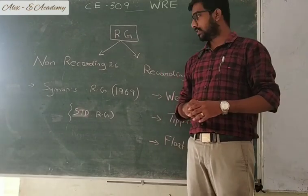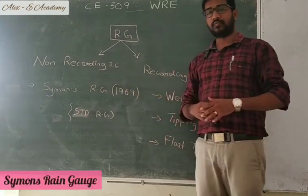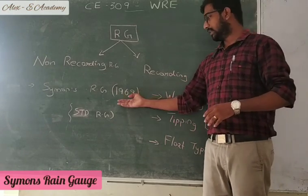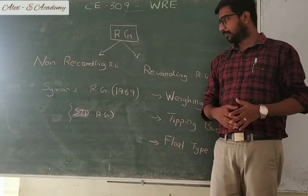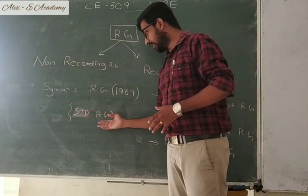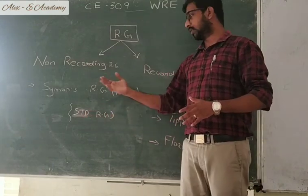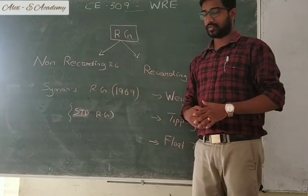The commonly used non-recording type rain gauge is Simon's rain gauge, which was used in India till 1969. After that, we developed a standard rain gauge which is quite similar to Simon's rain gauge. So after 1969, in India we commonly use standard rain gauges.